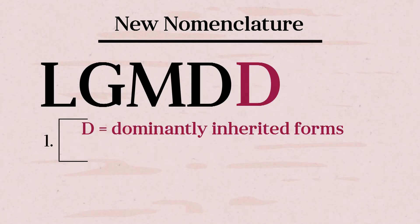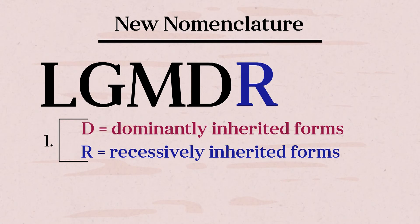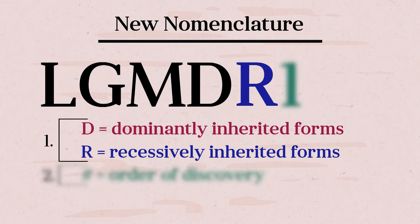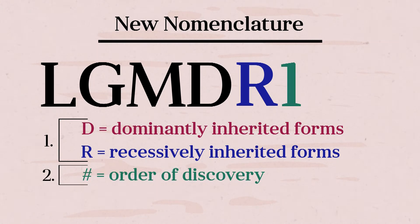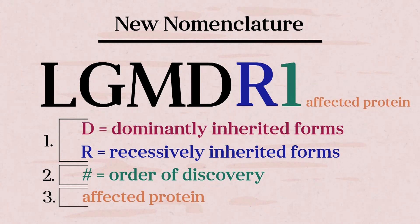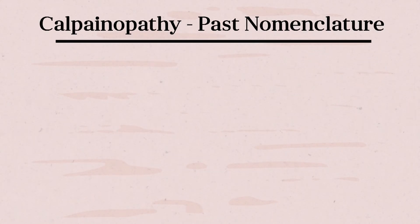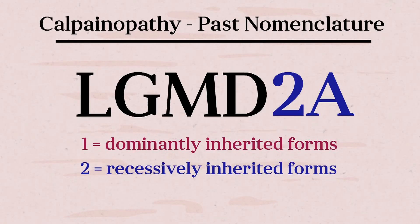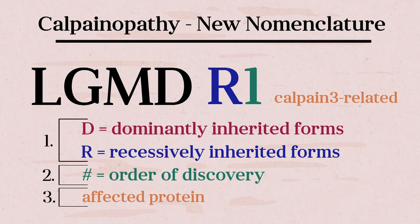The new nomenclature includes the letters LGMD followed by an R for Recessive or D for Dominant, then a number corresponding to the order in which the gene was discovered, and finally the affected protein for that disorder is referenced. As an example, LGMD2A, the previous designation for calpainopathy, is now LGMD-R1, calpain-3 related.